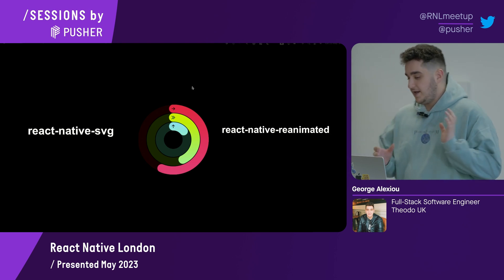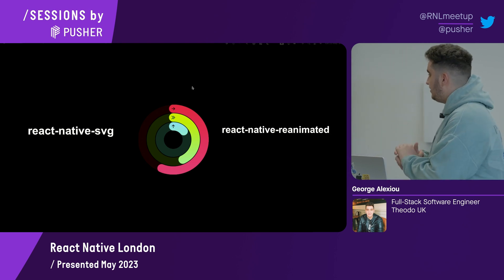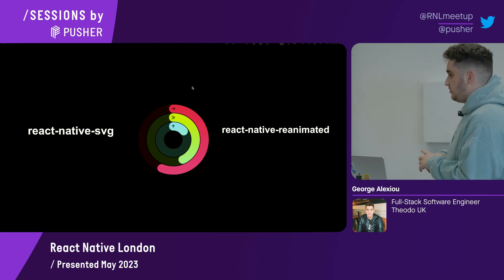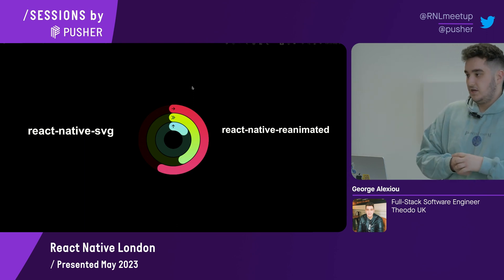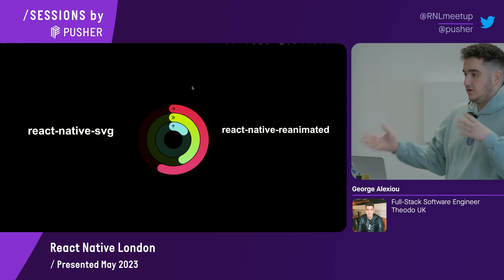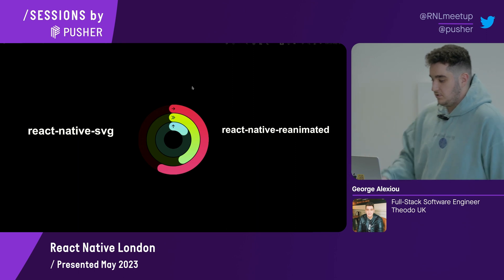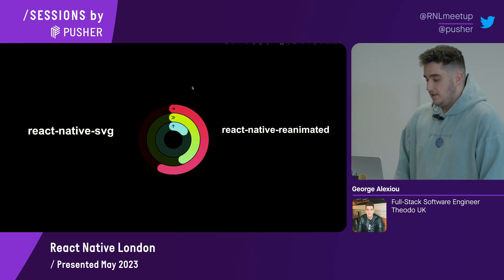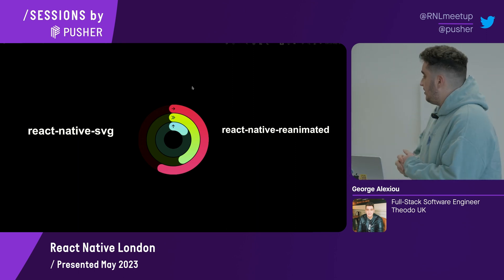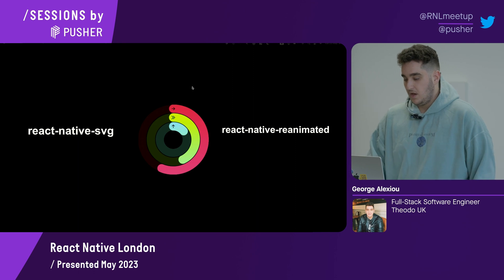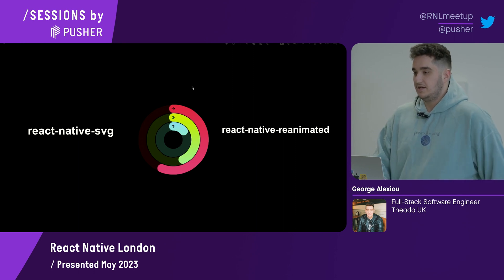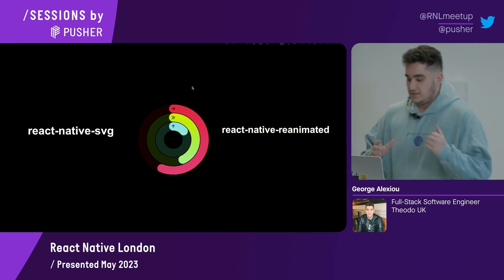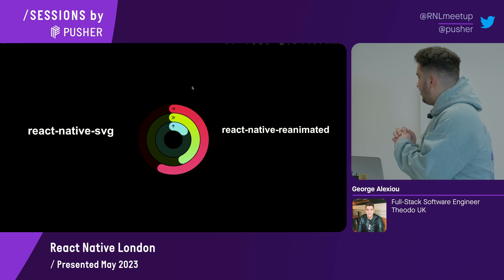The way I've done it is with React Native SVG. React Native SVG allows us to render shapes and different components the way we want. And then we have React Native Reanimated, which is basically just animating the whole component. So let's start.